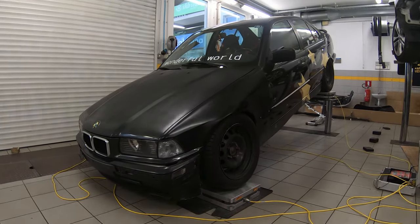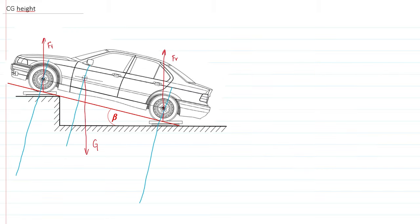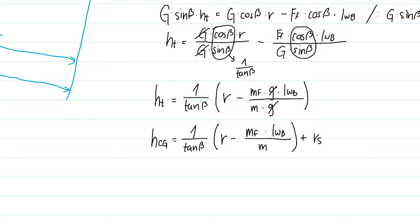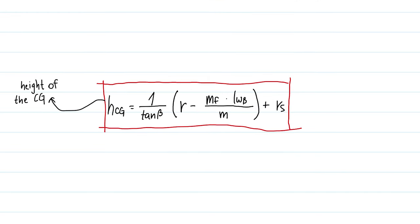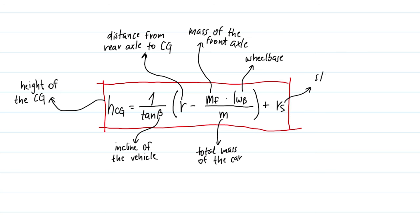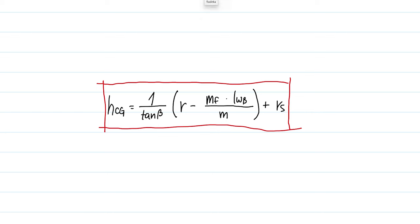With the measurements done, it is time to do the math. It is a little more complicated this time, but you can still apply simple physics. The height of the CG equals 1 divided by the tangent of the incline angle, multiplied by the longitudinal distance between the CG and the rear axle, minus the mass of the front axle multiplied by the wheelbase divided by the total mass of the car. You then add the static radius of the wheel, which you can simply measure. Note that this equation only works if the axle that is lifted is the front axle, but you can modify it by substituting the front CG distance and rear axle mass instead.